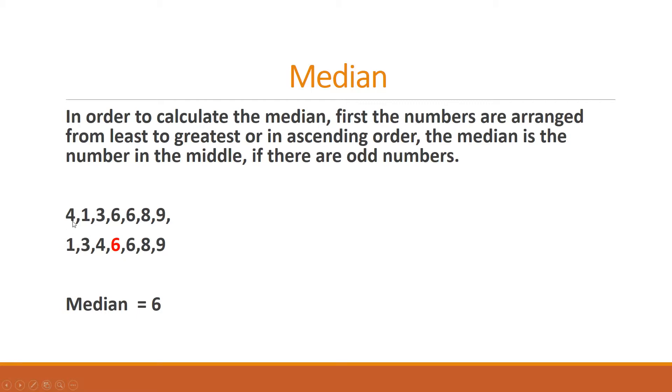So see these are the numbers 4, 1, 3, 6, 6, 8, 9 and if we count it 1, 2, 3, 4, 5, 6, 7 these are odd numbers.